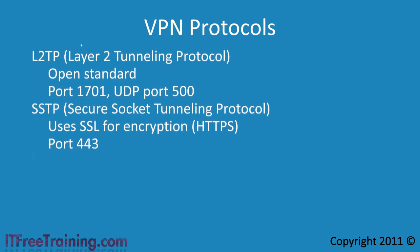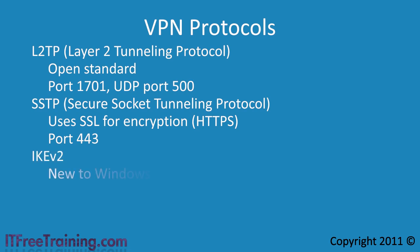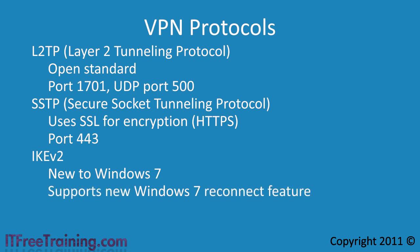The last VPN protocol is IKE version 2, which is new to Windows 7. IKE version 2 supports the new Windows 7 reconnect feature. Previously, if a VPN connection dropped, the user would have to reestablish the tunnel manually. With the reconnect feature this is done automatically by Windows, meaning a large file transfer would not have to be started over again. To use the reconnect feature you must be running Windows 7 and connecting to a Windows Server 2008 R2 remote access server.